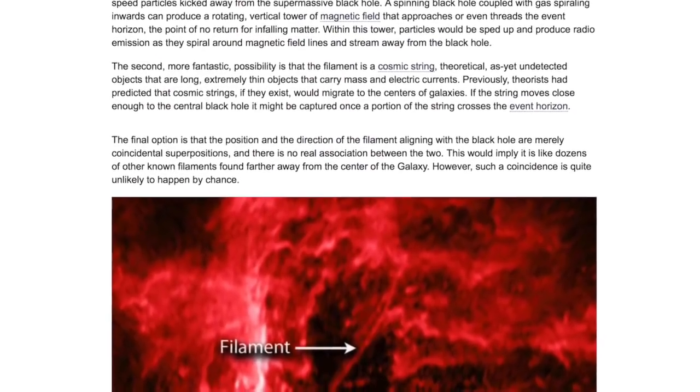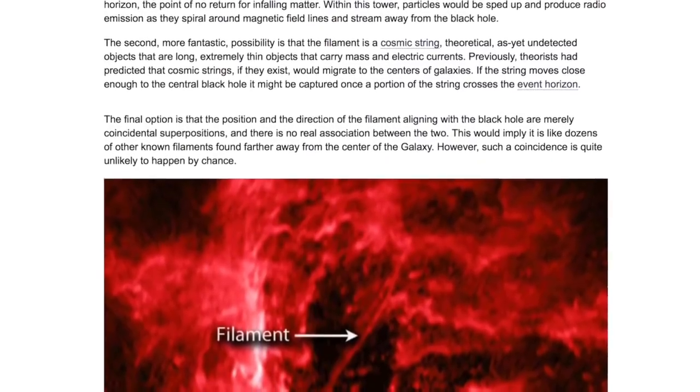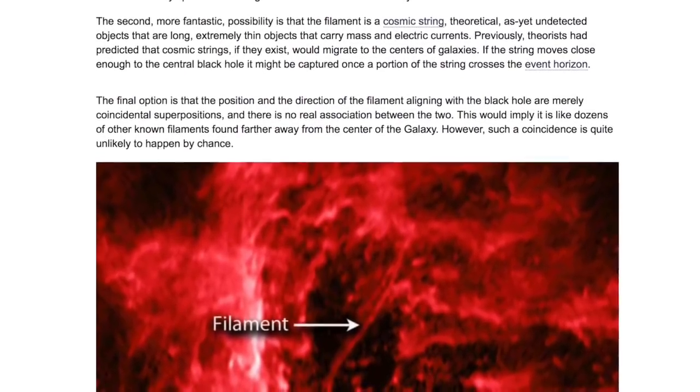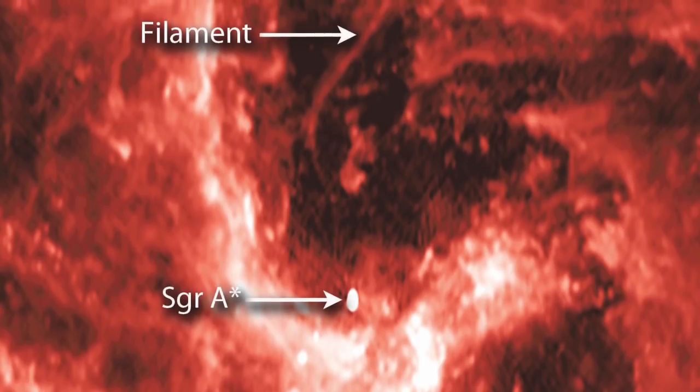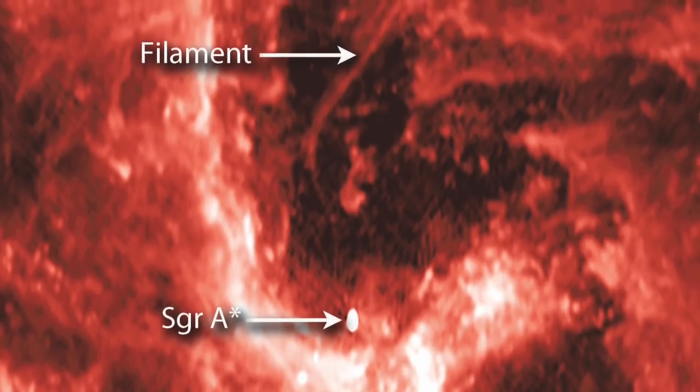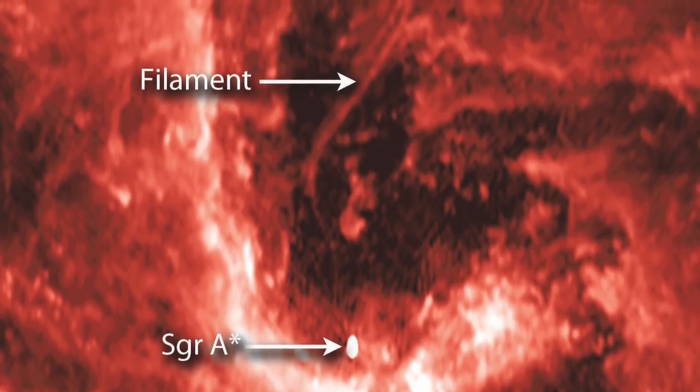Ironically, as described in the phys.org report, it's believed that hypothetical cosmic strings are long, extremely thin objects that carry mass and electric currents. The final notion the scientists have considered is that the alignment of the filament with the galactic center is coincidence.